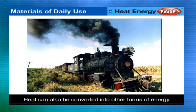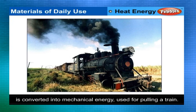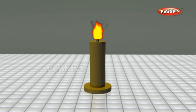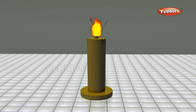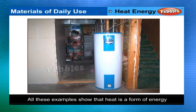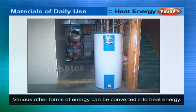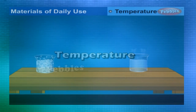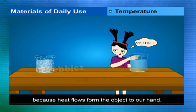Heat as a form of energy: heat can be converted into other forms of energy. In a steam engine, heat from burning coal is converted into mechanical energy for pulling a train. When a candle burns, chemical energy is converted into heat and light. In an electric heater, electrical energy is converted into heat and light — all showing that heat is a form of energy.